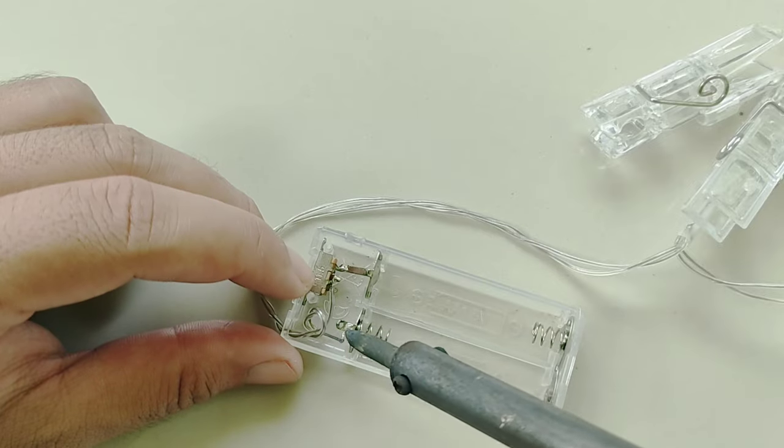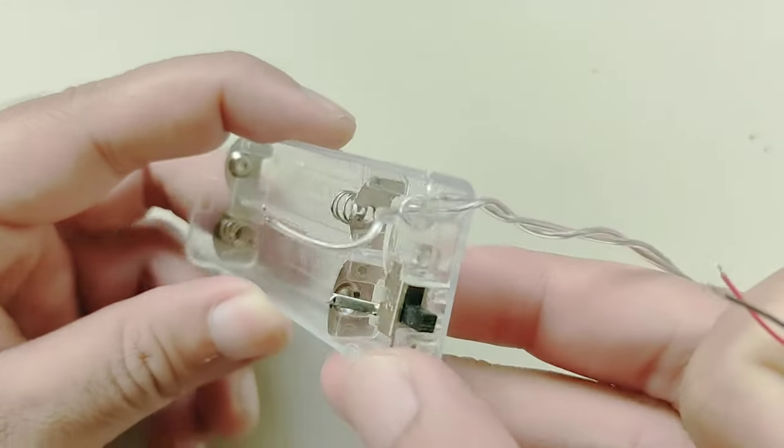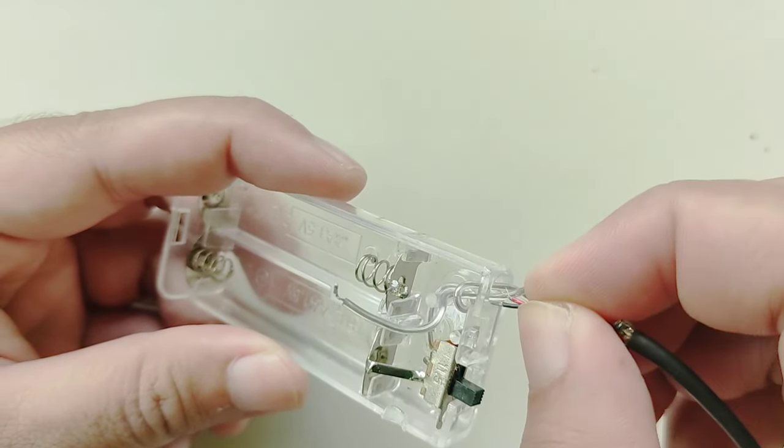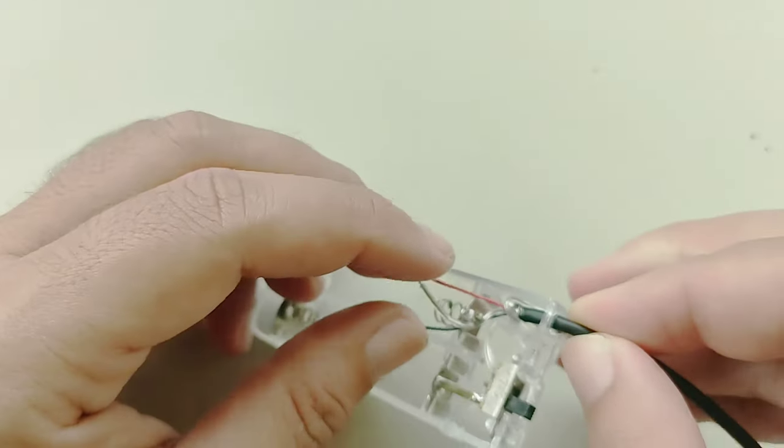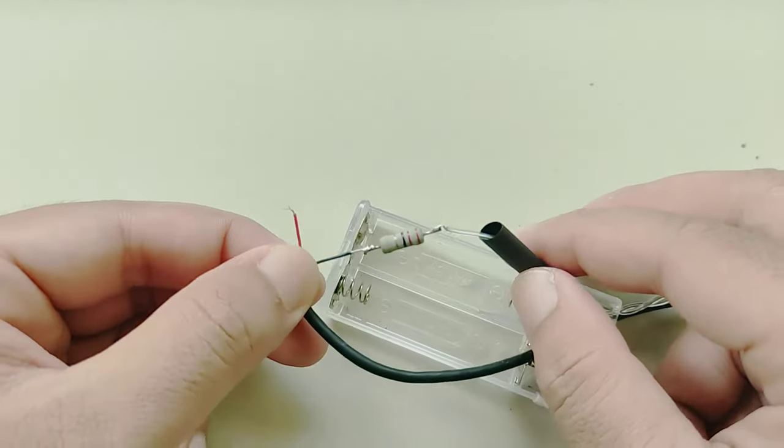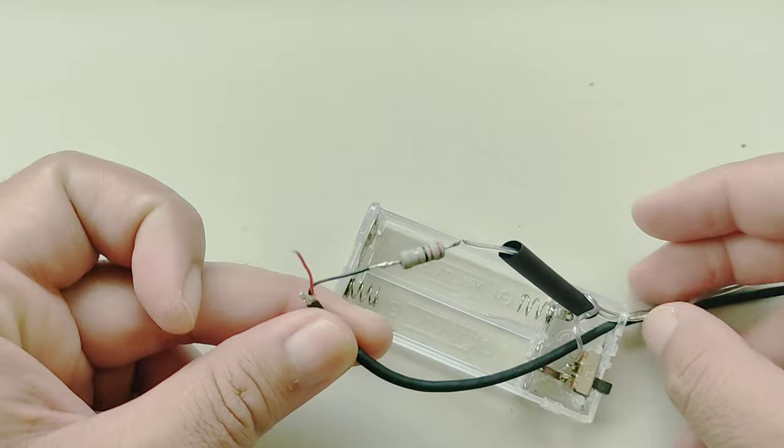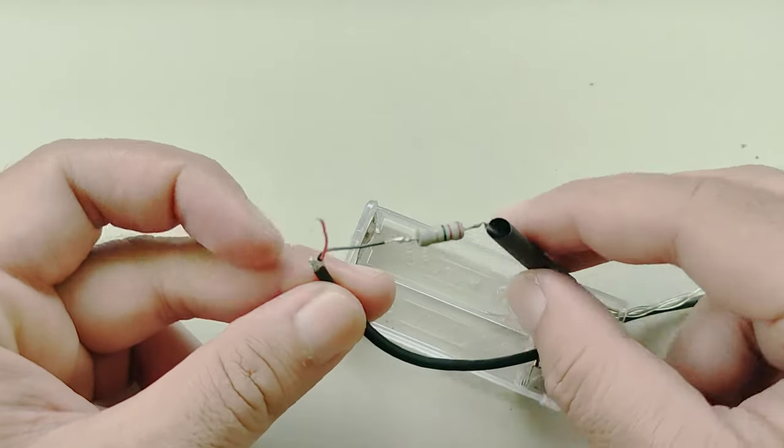I'll start by unsoldering the negative wire. The battery case already had a hole, so I had the USB cable pass through it. The resistor is then soldered to the negative wire of the LED light string.